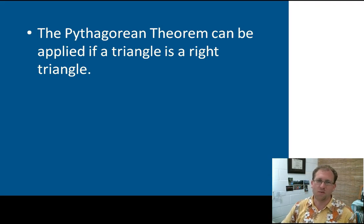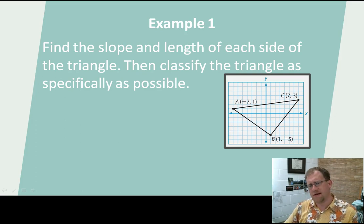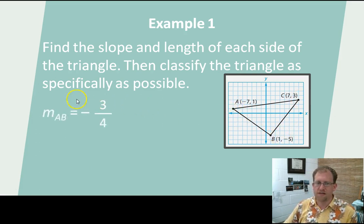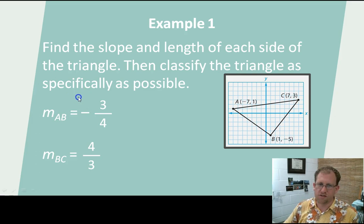Here we have a triangle, and we are curious, is this a right triangle? Is this a 90 degree angle? Let's find the slope and length of each side of the triangle, and then we'll classify the triangle as specifically as we can. These are my coordinates of my points. I can use the slope formula to determine that the slope of segment AB is negative three quarters. Then I can use the slope formula to find that BC is, in fact, four-thirds. So, they are negative reciprocals of each other. And the slope of AC is one-seventh.